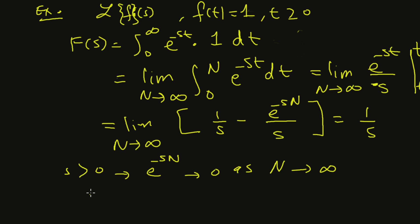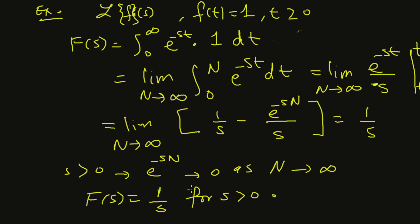So the Laplace transform of the constant function one is one over s, for s positive. When s is less than or equal to zero, the integral from zero to infinity of e to the negative st dt diverges, so this transform only works for s positive.